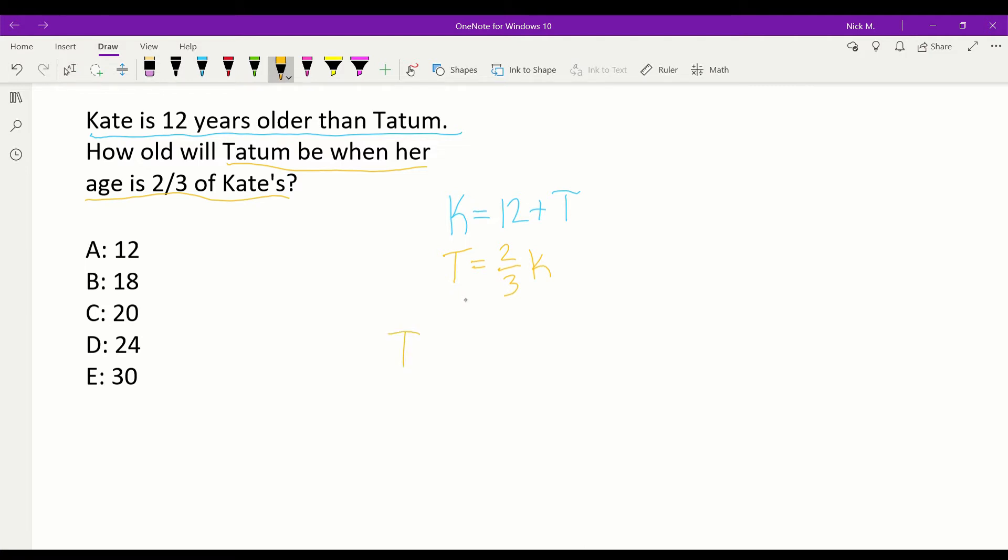So with this, I'm going to replace this K right here with what this is up here. So we see that 12 plus T equals K. So let's throw it down in this equation. So we have T equals two-thirds, that's from this bottom equation here, times, then like I said, we're replacing the K with 12 plus T.